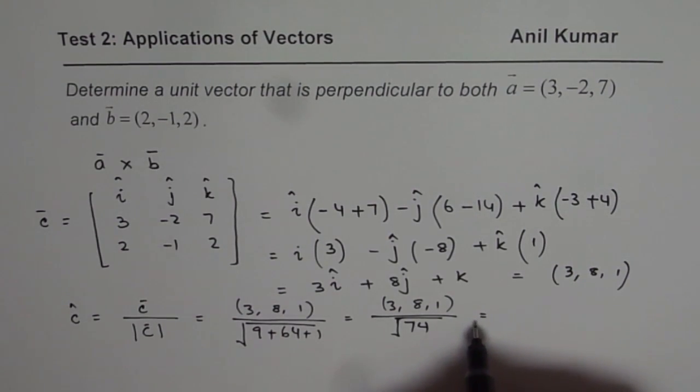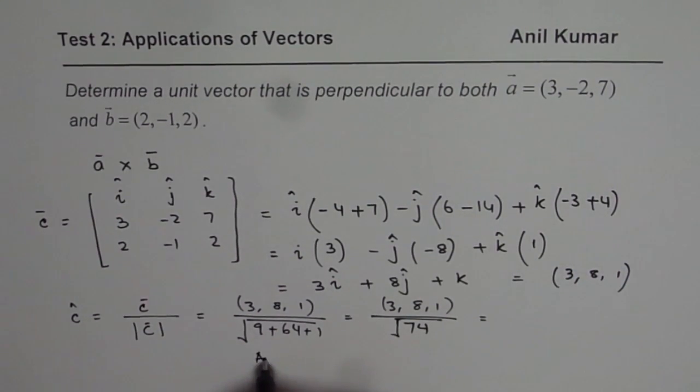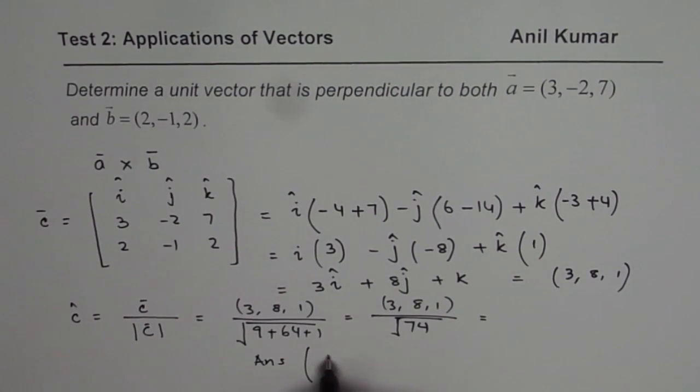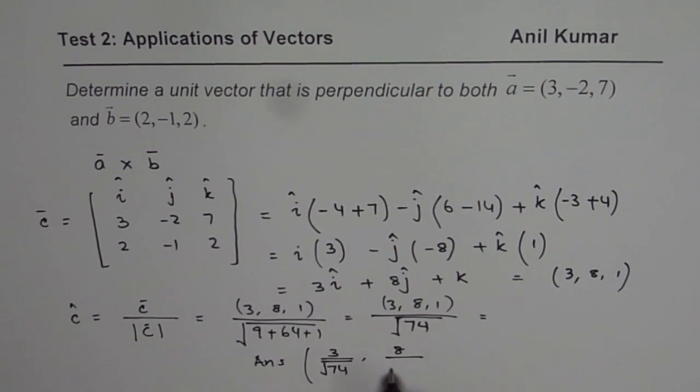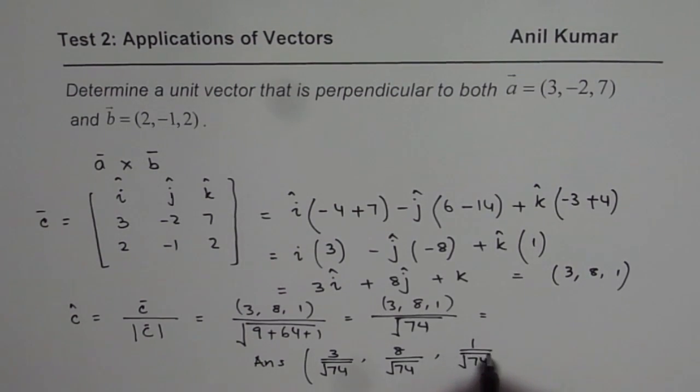We could write this as, we could write our answer here, as 3 over square root of 74, 8 over square root of 74, and 1 over square root of 74.